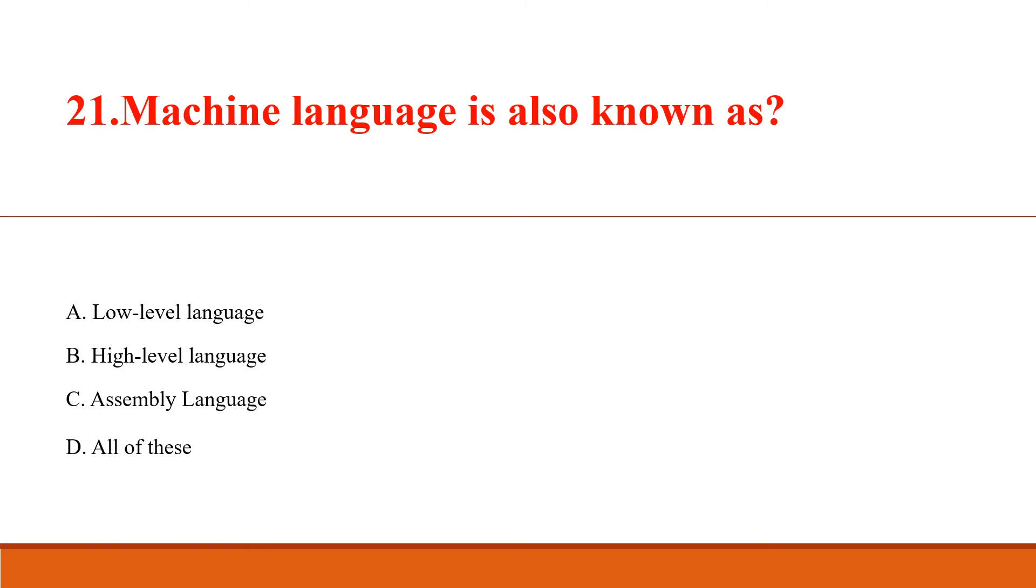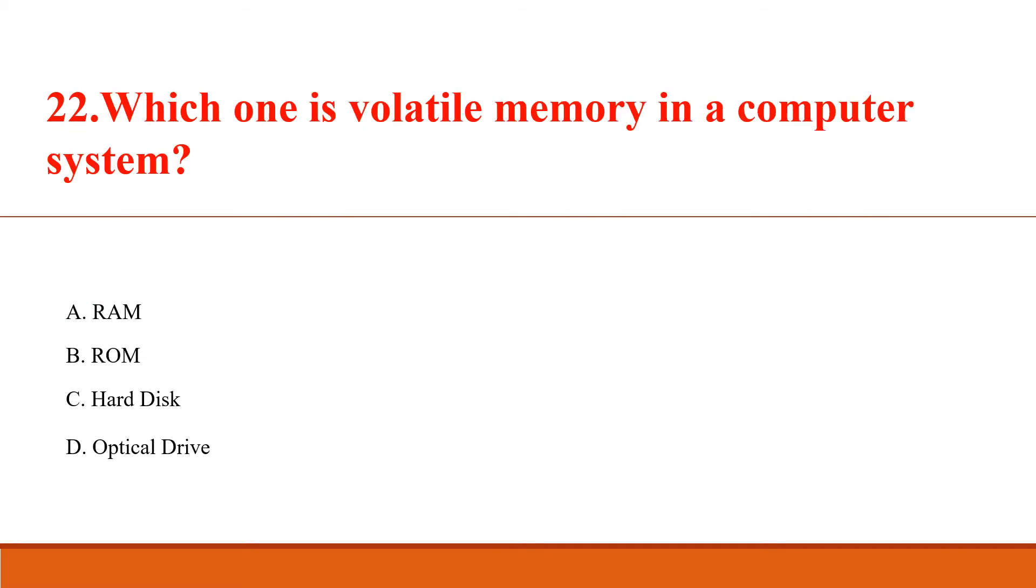Machine language is also known as? Answer Option A: Low level language. Which one is volatile memory in a computer system? Answer Option A: RAM. Volatile memory is computer memory that requires power to maintain stored information, whose contents are erased when system power is turned off or interrupted.